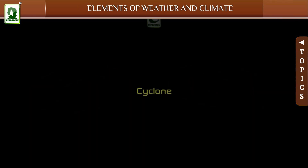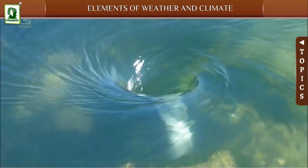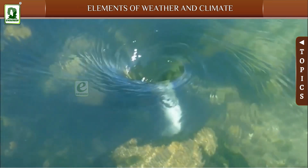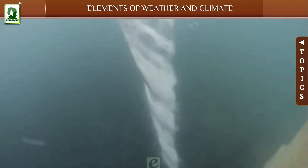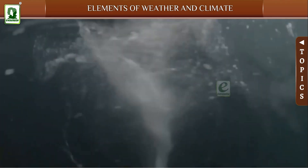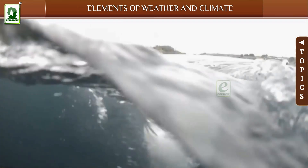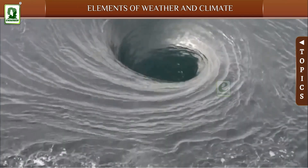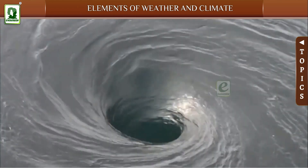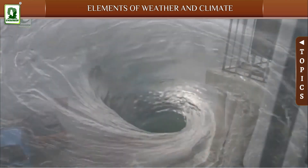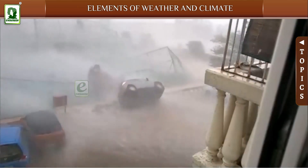When a low pressure area is surrounded from all sides by a high pressure area, winds from all directions blow towards the low pressure area in the center, causing a cyclone. Strong spiral winds move in an anti-clockwise direction in the northern hemisphere and a clockwise direction in the southern hemisphere, causing vast devastation and loss of life and property.